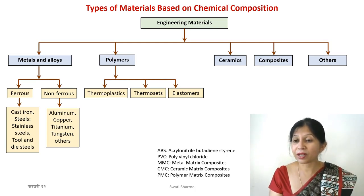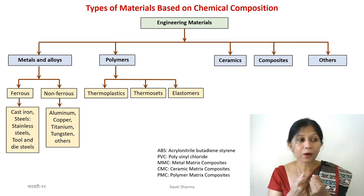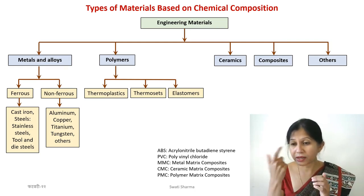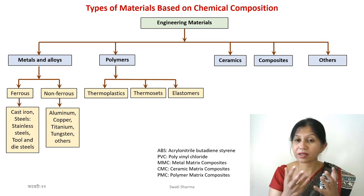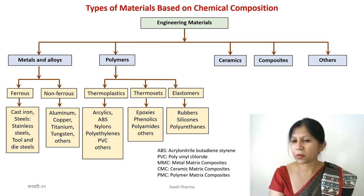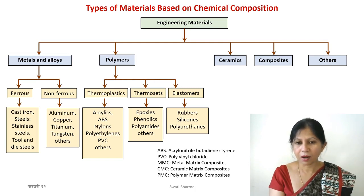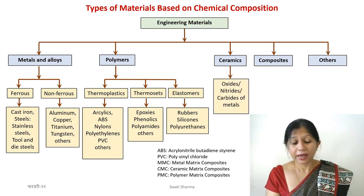The third class is elastomers. Natural rubber is an example of an elastomer. Silicone is another polymer that behaves as an elastomer — it is used, for example, in making contact lenses. You can do a quick internet search to find out more about these polymers and their applications.